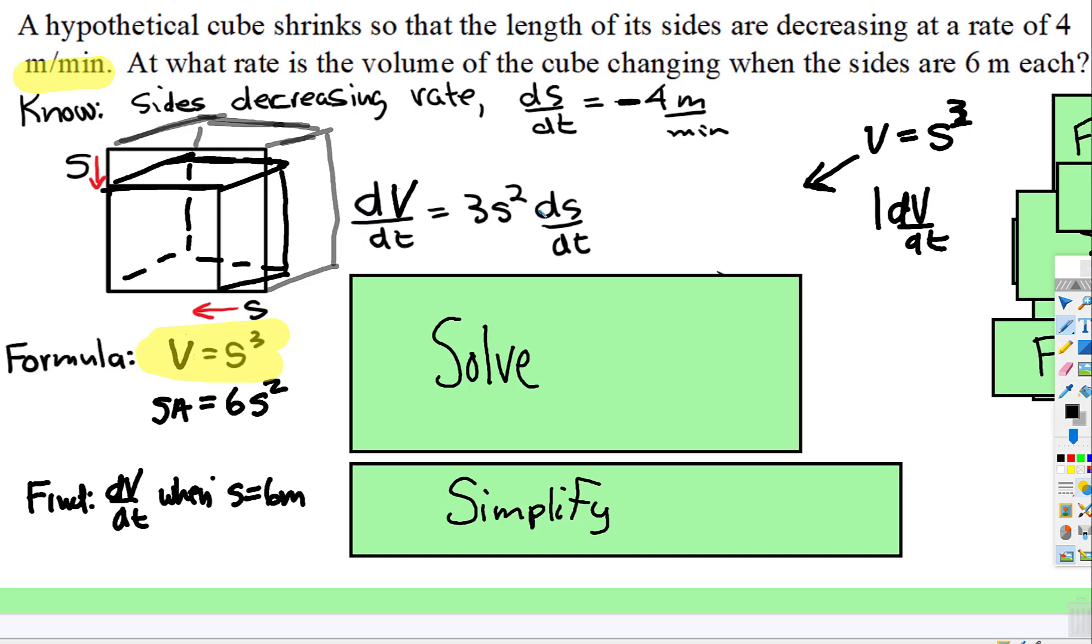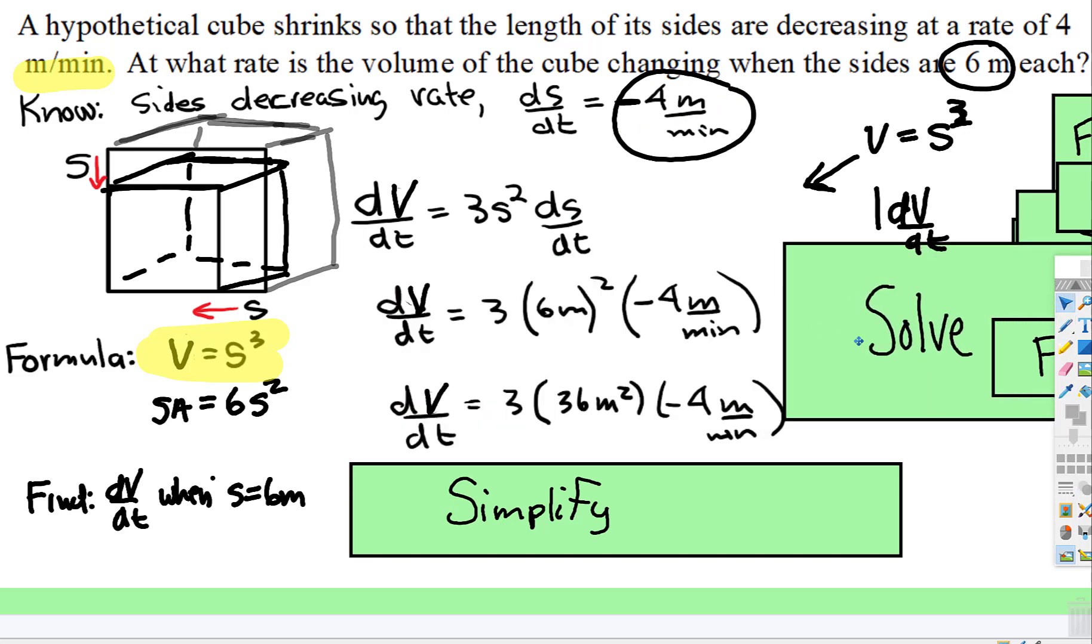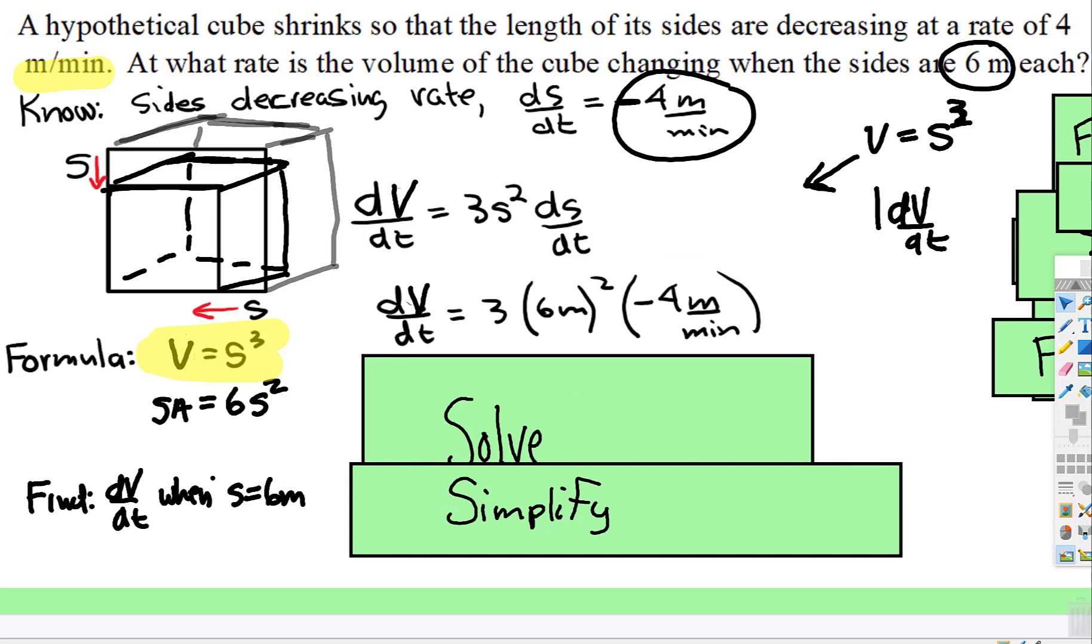And now you're going to input everything you know. So six meters is what the side length is. And then ds/dt is that negative four meters per minute. So you're going to substitute that. So we have six meters squared. Well, that becomes 36 meters squared. And then you're going to multiply those things together.